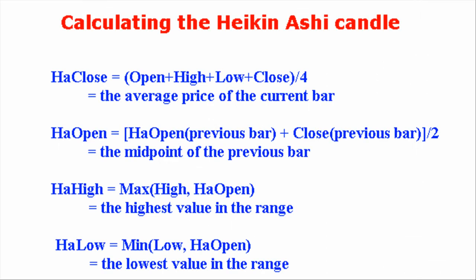The Heikin-Ashi candle is a technique to better visualize price trends and is calculated as shown here. The Heikin-Ashi close is the average price of the current bar. The Heikin-Ashi open is the midpoint of the previous bar. The Heikin-Ashi high is the highest value in the range of the high or the Heikin-Ashi open, and the Heikin-Ashi low is the lowest value in the range of the low or Heikin-Ashi open. The average Heikin-Ashi closing I calculate by dividing the sum of these four values by four.